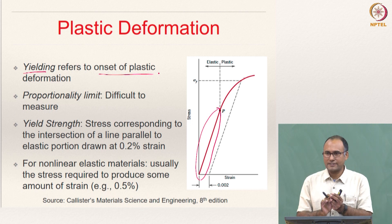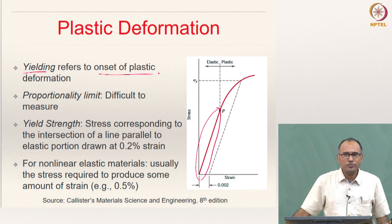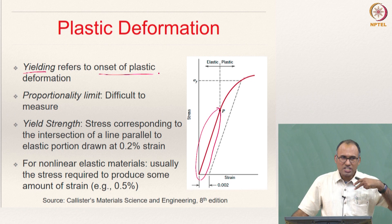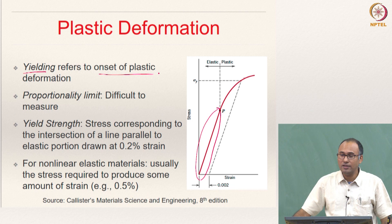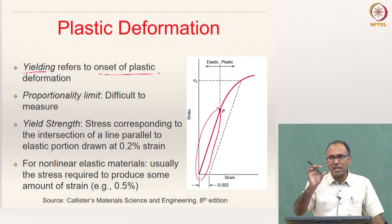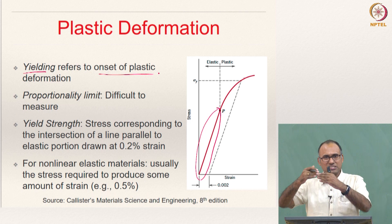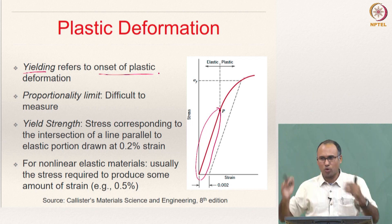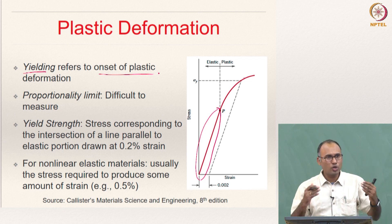You also have something called the proportionality limit. What is the proportionality limit? Within that limit, your stress is proportional to strain. Just above the proportionality limit and below the yield point, you will still have elastic deformation but stress and strain need not be proportional. The gap between the proportionality limit and the elastic limit is very small, and hence it is usually very difficult to identify, but you should know what proportionality limit means.